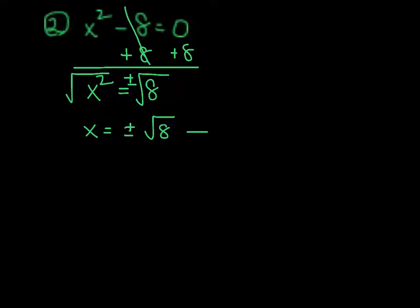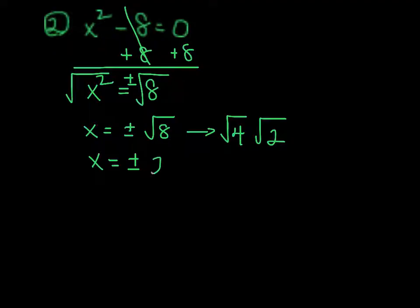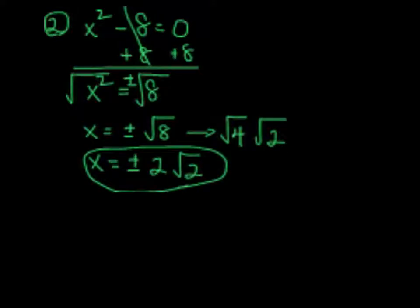Radical 8 can break down because there are two numbers that multiply to 8 where one of them is a perfect square — that would be 4 and 2. So bring down that plus or minus: the square root of 4 is 2, and then radical 2. So we again have two solutions: x equals plus or minus 2 radical 2.